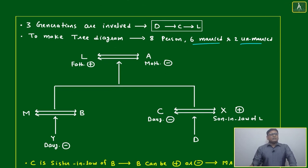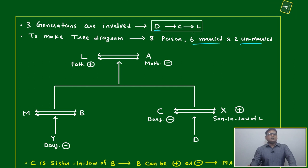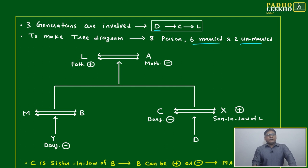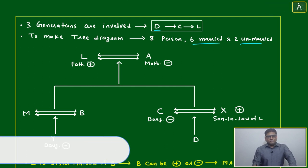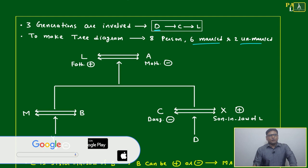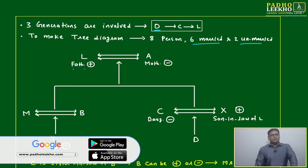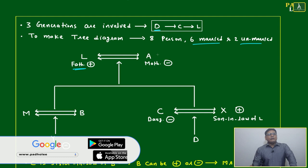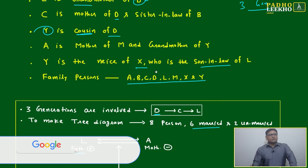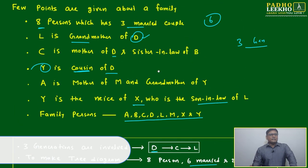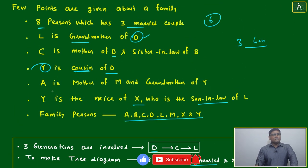We'll try to understand based on a flow diagram. From D to C, and C to L — so L will be at the topmost, meaning the top generation, which you can call the grandfather generation. And we know it is given that L is the grandfather generation.